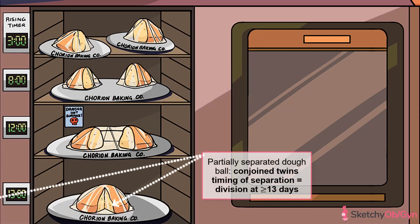If division of the zygote happens at 13 days or later, this is when you get conjoined twins. That's why this piece of dough next to the 13-hour timer is only partially separated.